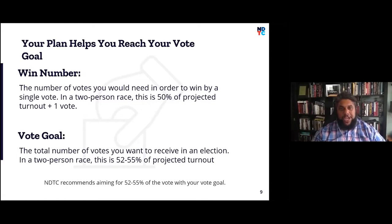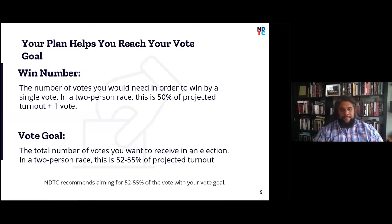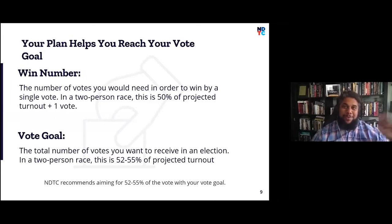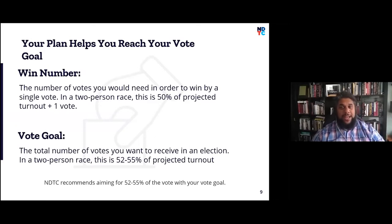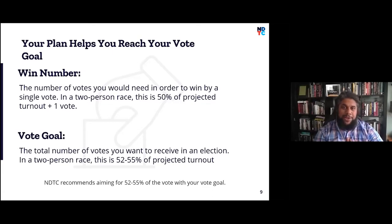For local elections with more than two candidates, there's no quick formula for win number — it takes more guessing. The approach involves figuring out how many people will vote, estimating how well your least-competitive opponent will do, and then calculating 51% of what's left. I encourage you to go to the Trained Democrats website, where there's a training and a plug-and-play template specifically for this.